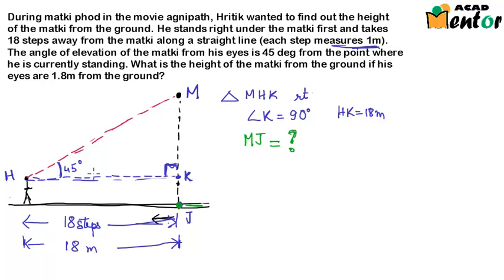Now here we know angle H, that is 45 degrees. Angle H is equal to 45 degrees. So in accordance with angle H, MK is the side that is opposite to it.